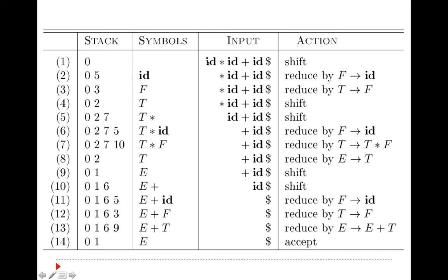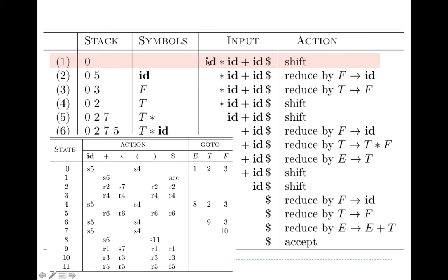Now, 0 and id will be referred in the parsing table. We refer to 0 and id and find a shift entry. So we shift id to the symbols part, and because it is shift 5, state 5 gets pushed onto the stack.